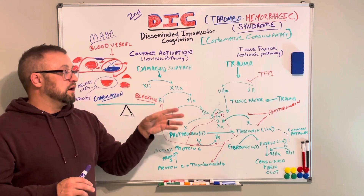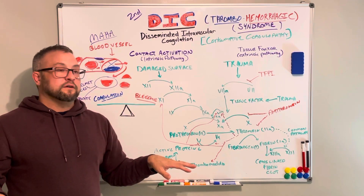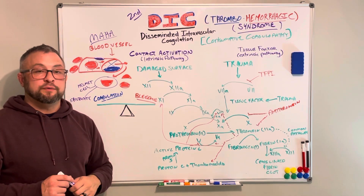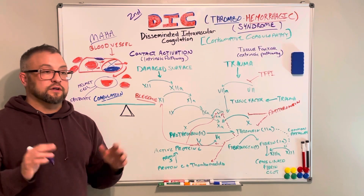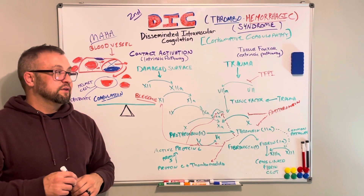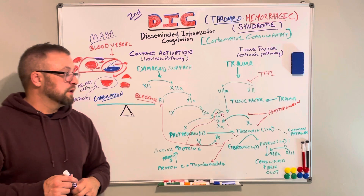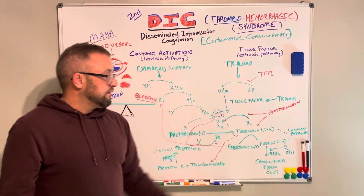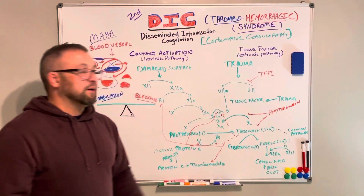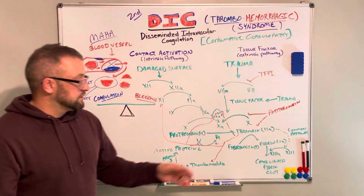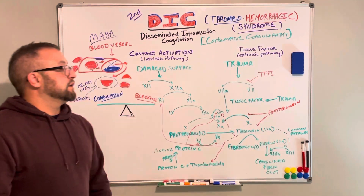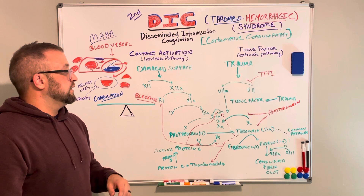These microclots also travel out to the microcirculation. The kidneys receive a large portion of cardiac output to filter blood, making them a prime location for small clots to become wedged in — so renal failure can result. Due to consuming all clotting factors in DIC, fibrinogen is depleted. On labs, fibrinogen will be low because it has been used up to make clots that are now being broken down.